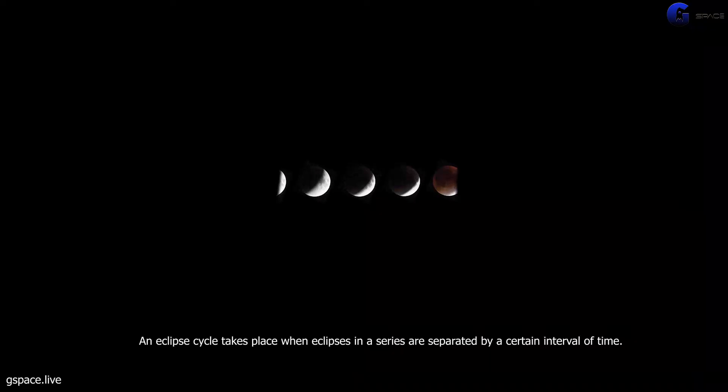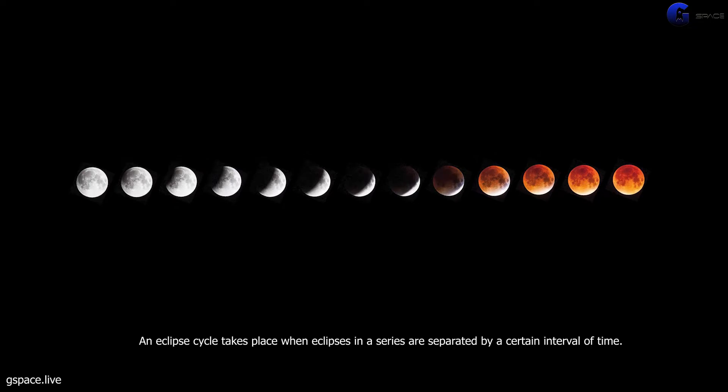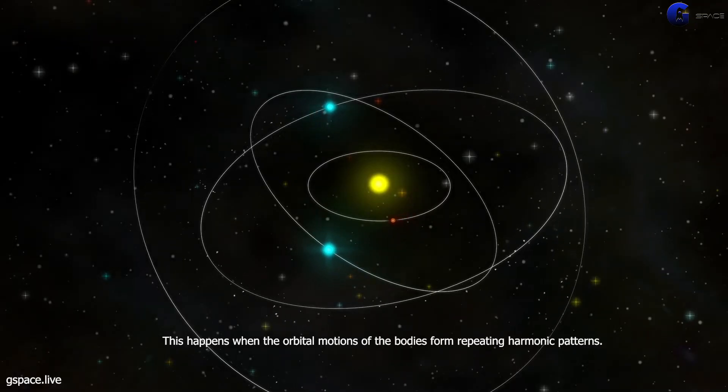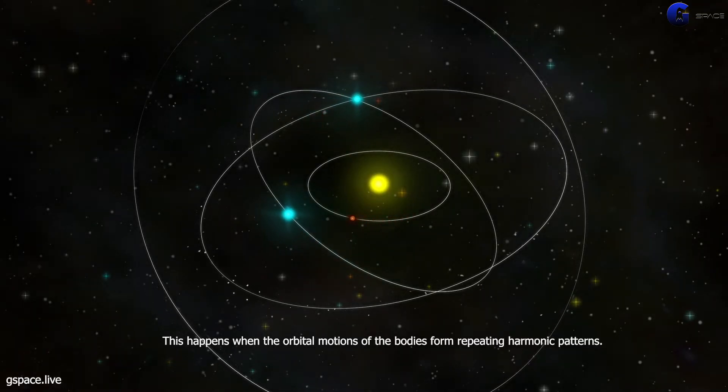Eclipse cycles. An eclipse cycle takes place when eclipses in a series are separated by a certain interval of time. This happens when the orbital motions of the bodies form repeating harmonic patterns.